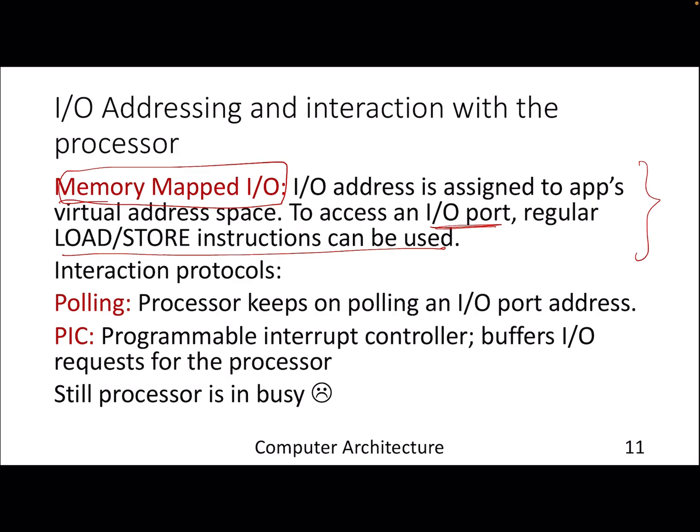Let's say a particular device is sending data through a particular IO port — for example, your keyboard or mouse. One older way for the processor to interact is polling, where the processor keeps probing a particular IO port address asking if there's anything to send. It's a time-consuming process because you iteratively go and check whether the IO device has anything to send — wasting a lot of time unless the IO device actually responds.